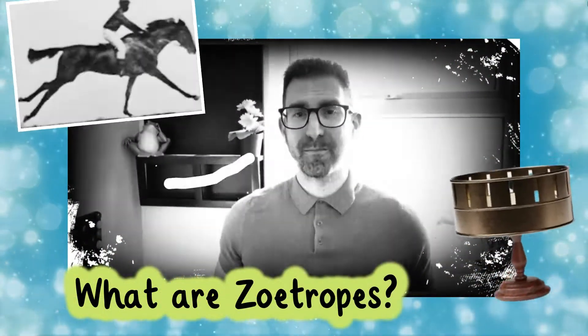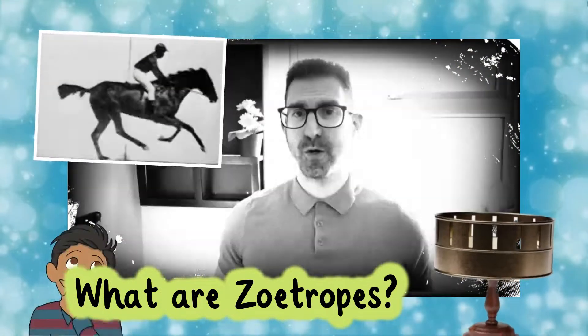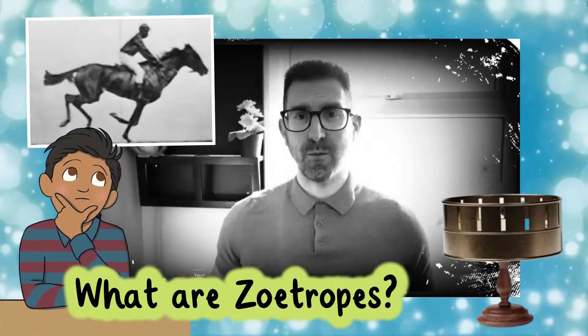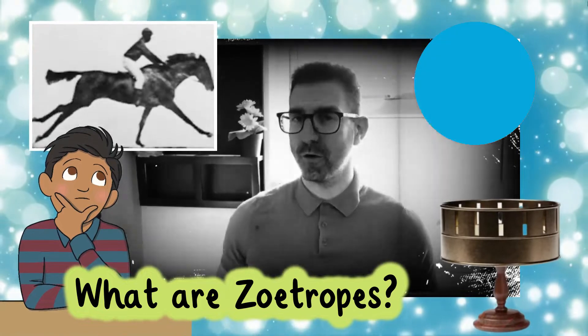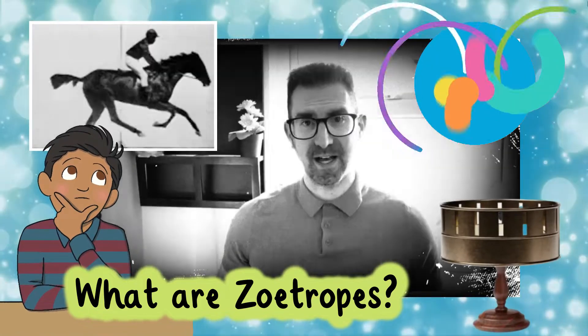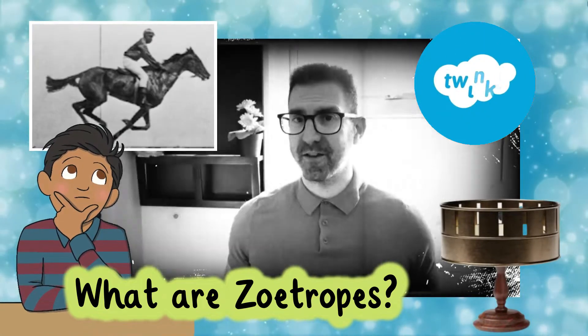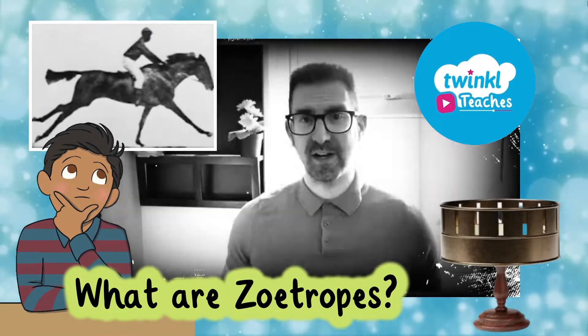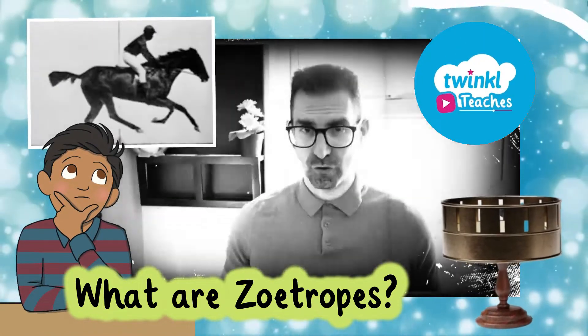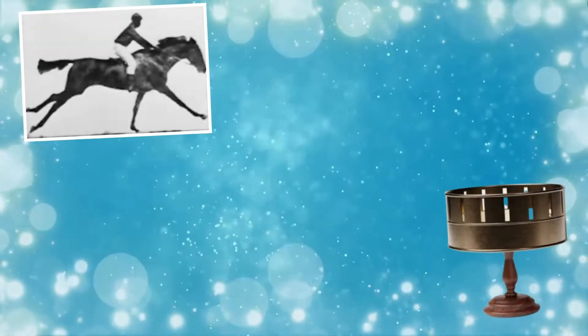What are zoetropes? A zoetrope is an early way to make a moving picture and was used before film and animation began. Check out the resources in this video to find out how your children can make their own zoetrope.